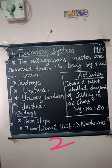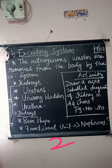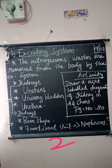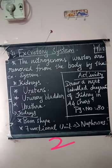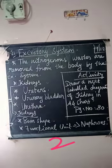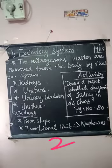The excretory system removes nitrogenous waste from the body. This excretory system is composed of four parts: kidneys, ureters, urinary bladder, and urethra.